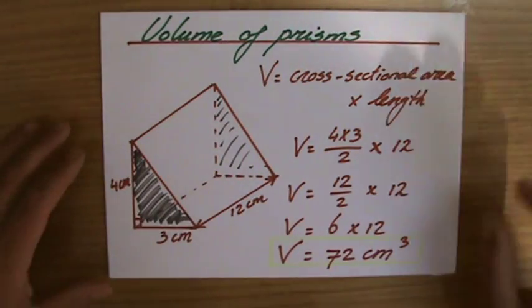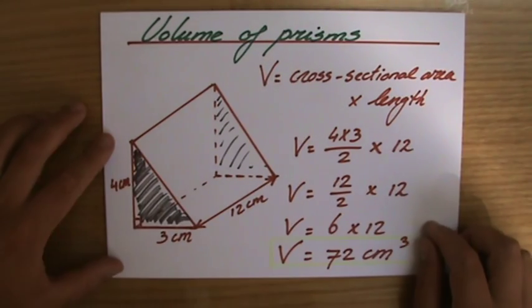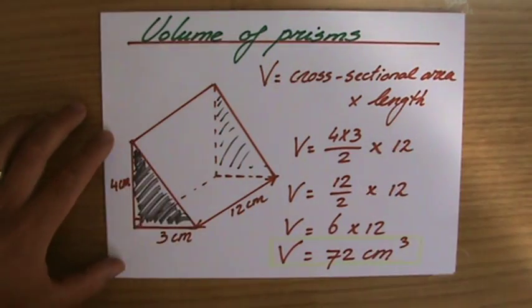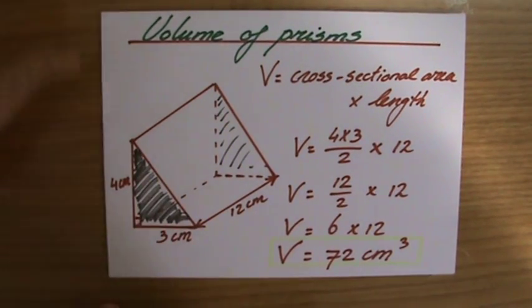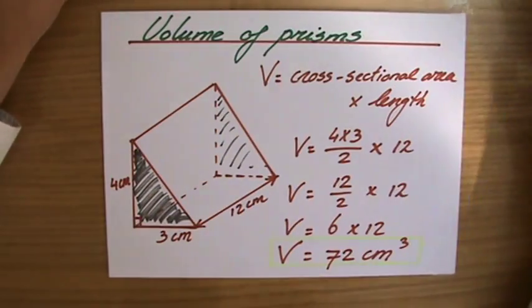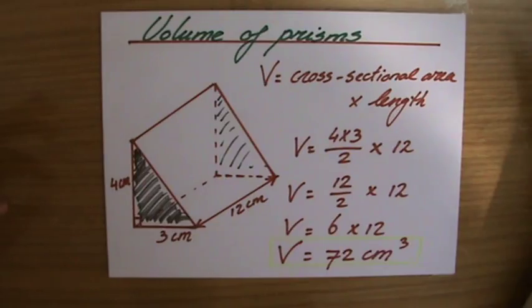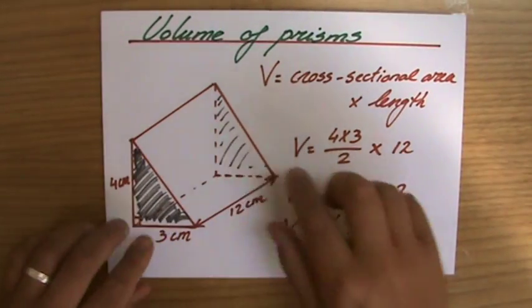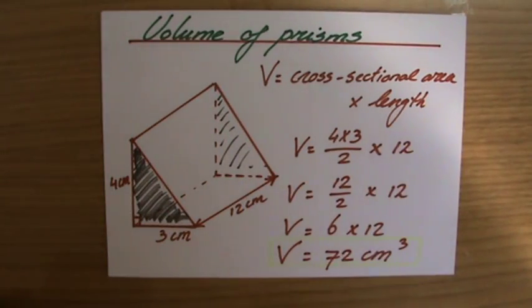So try one or two more example questions about how to calculate the volume of prisms. Area of the cross section could be a triangle, could be a hexagon, could be a square. And you multiply that by the length, which is the distance between those two similar faces. I'll see you at the next question.